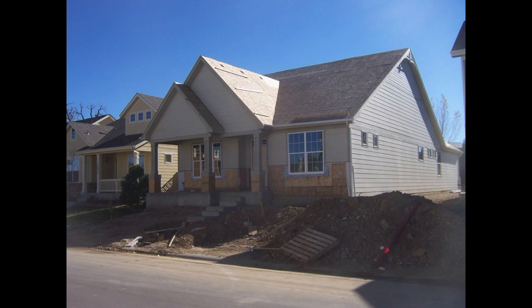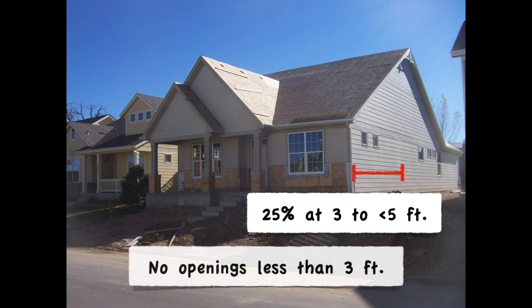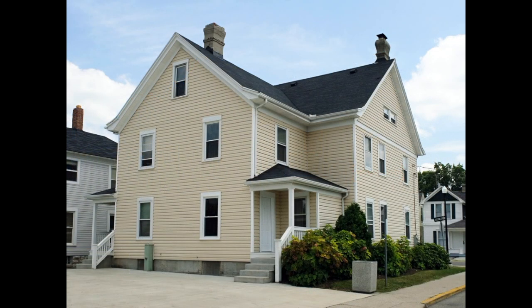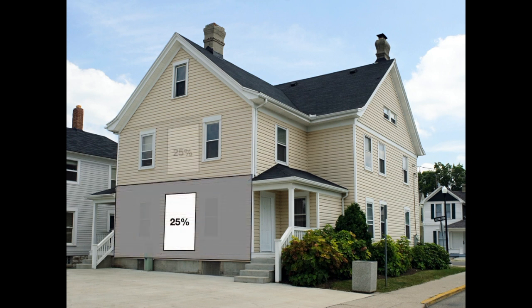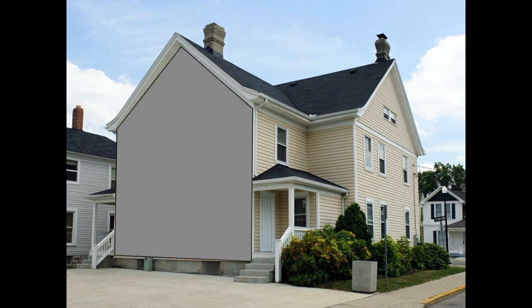Five feet or more, just like projections and walls, there's no restrictions. But between five feet and three feet, openings can't be more than 25% of the wall area. And you can have no openings less than three feet of a fire separation distance. But what does 25% of the wall mean? Does it mean 25% of the wall for each story individually to spread out these openings, or could the entire wall have 25% of openings on a single story?